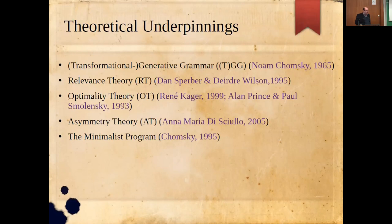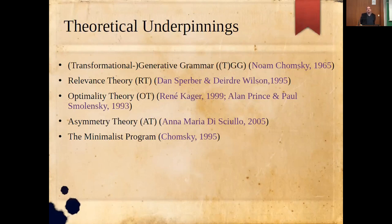The first theoretical model relied on is the classical one: transformational generative, or simply generative, grammar proposed by Noam Chomsky. Back in 1957, in his Syntactic Structures, Chomsky proposed a completely new model of language based on mathematical linguistics and afterwards computational linguistics.